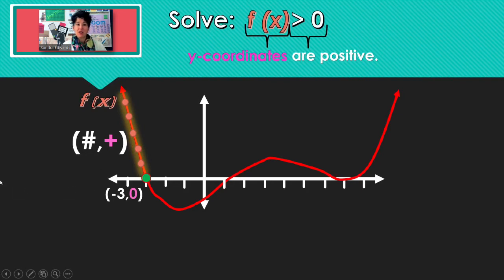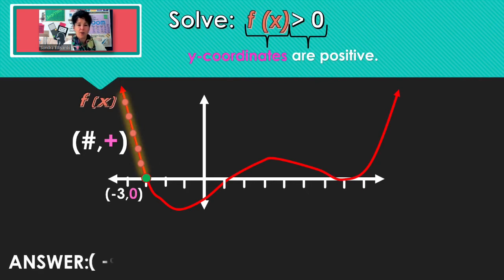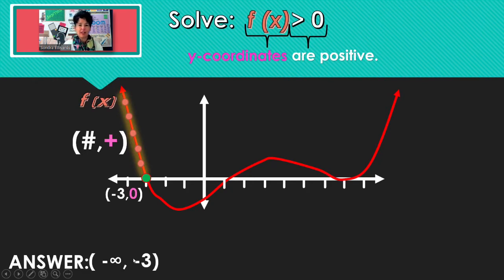So all of the x-values from negative infinity until I get to negative 3, when I substitute those into the function, we are going to plot points above the x-axis. So our answers so far are the x's from negative infinity up to negative 3, and I'm using a parenthesis there to leave out negative 3, because the y-coordinate is 0 and we're only looking for positive y-coordinates. So negative 3 needs to be left out.